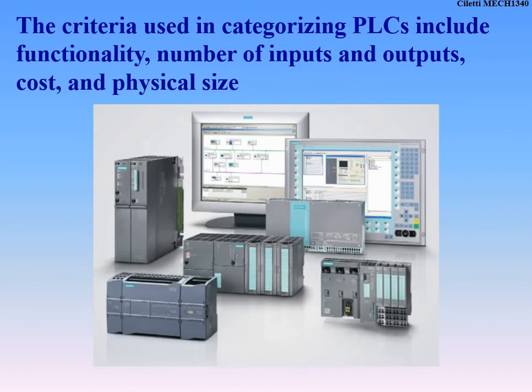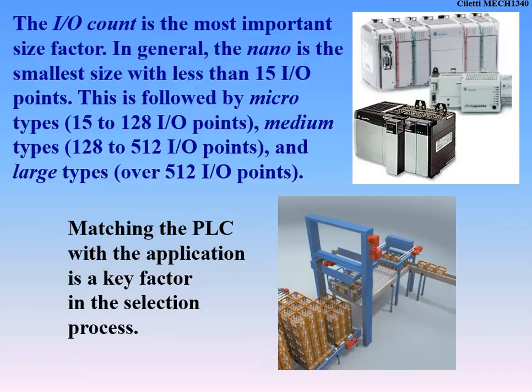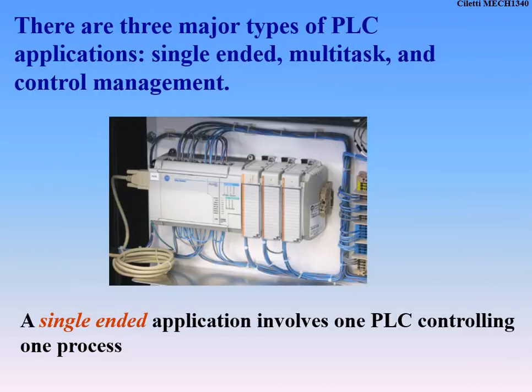PLC size and application really depends on what you're running and how many inputs and outputs you need. Small PLCs have anywhere from 15 to 128 IO. Medium ones handle 128 to 512 IO. Anything large is over 512 inputs and outputs — that's a pretty large PLC doing a lot of different things, and it might be your master PLC overseeing all the others. The three major types are single-ended, multitask, and control management.